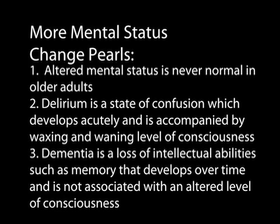Recall that altered mental status is never normal in older adults. Delirium is a state of confusion which develops acutely and is accompanied by waxing and waning levels of consciousness. Dementia is a loss of intellectual abilities, such as memory, that develops over time and is not associated with an altered level of consciousness.